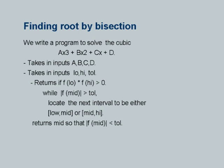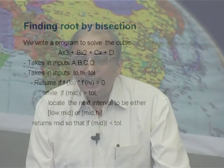Take inputs a, b, c, d, then take inputs low, high, and TOL — which is a tolerance. I mentioned the tolerance around the function value at mid.